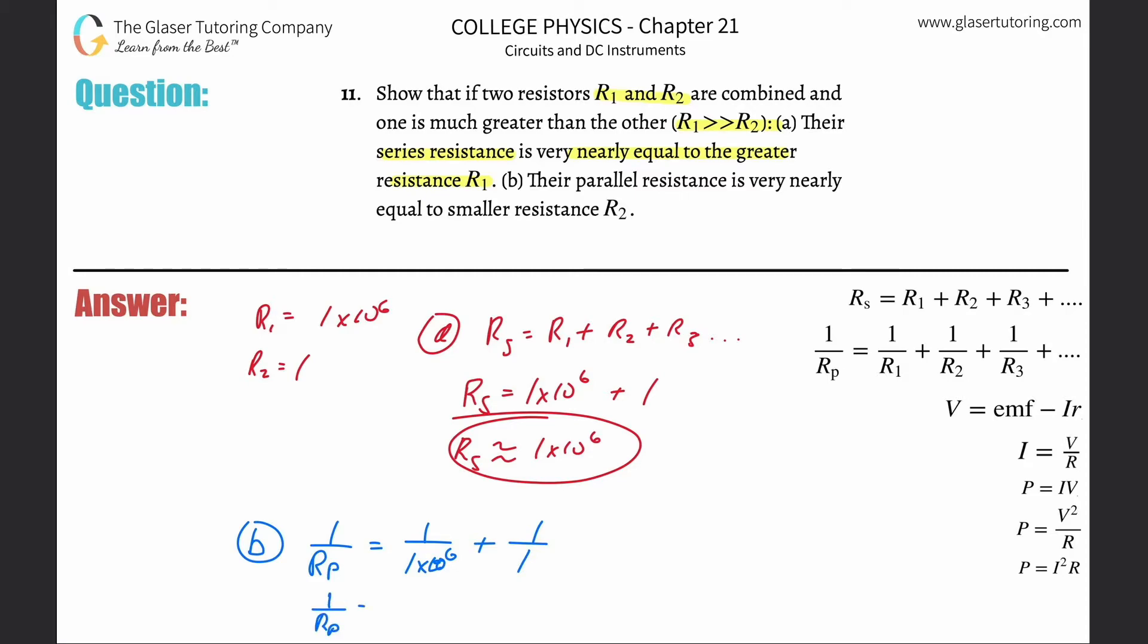So this is now going to be 1 over Rp is equal to, plug it into your calculator, see what it gives. So 1 divided by 1 times 10 to the 6th, hold on, 1 divided by 1 times 10 to the 6th, plus then 1 over 1.